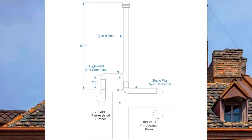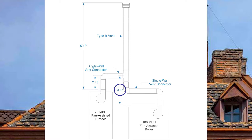For the next example I have two fan assisted appliances dumping into a 50-foot common vent. The first is a 70,000 BTU fan assisted furnace with a two-foot vent connector rise. The other is a fan assisted boiler at 100,000 BTUs with a three-foot vent connector rise. The appliances have single wall vent connectors, therefore we must use table C4.